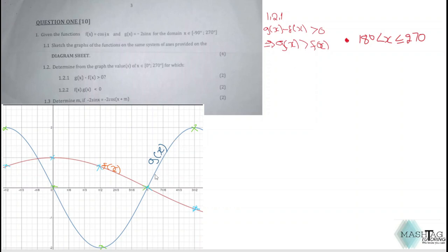Therefore we are saying from just after 180°, g(x) is greater than f(x) all the way to 270°. Here we say x is less than or equal to 270° because we're dealing with the domain up to 270°. Even at 270°, the graph of g(x) is still greater than f(x). Therefore, that's why we have this less than or equal to 270°.